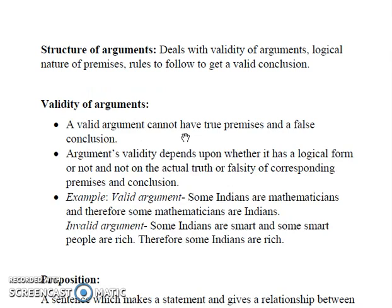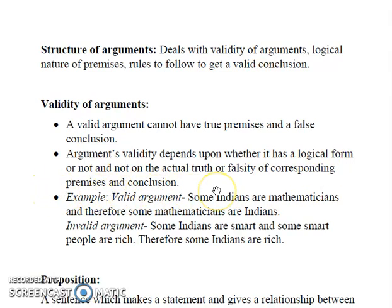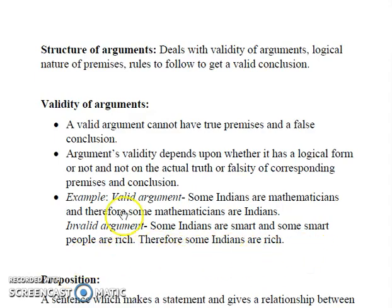A valid argument cannot have true premises and a false conclusion. Argument validity depends upon whether it has a logical form or not, and not on the actual truth or falsity of corresponding premises and conclusion. For example, 'some Indians are mathematicians, therefore some mathematicians are Indian' — this is a valid argument. Whereas 'some Indians are smart, and some smart people are rich, therefore some Indians are rich' is an invalid argument, as it can happen that all the smart people who are rich are not Indians.